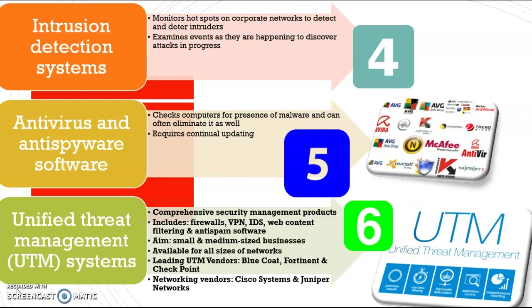Number six is the Unified Threat Management system, or UTM. It is a comprehensive security management product that combines the firewall, VPN (Virtual Private Network), IDS, web content filtering, and anti-spam software. The aim of the UTM system is for small and medium-sized businesses, but it is available for all sizes of networks.